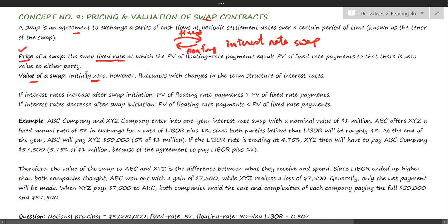After initiation, the value of the swap will fluctuate with changes in interest rates. As the floating rate changes, the swap value fluctuates. If interest rates increase after swap initiation, the one paying the floating rate will lose because they will have to pay more, while the one paying fixed will be in a beneficial position since they are obliged to pay a lesser amount.